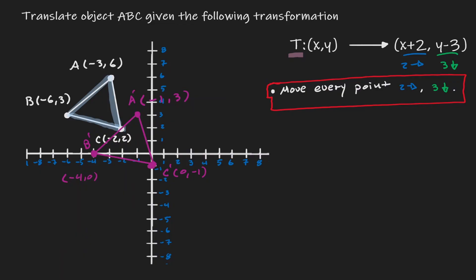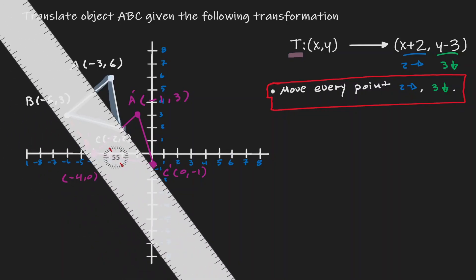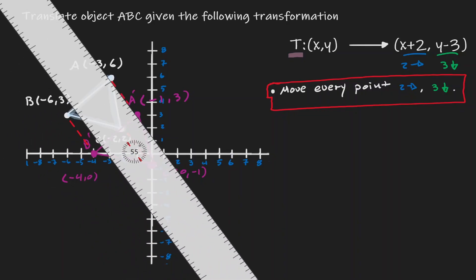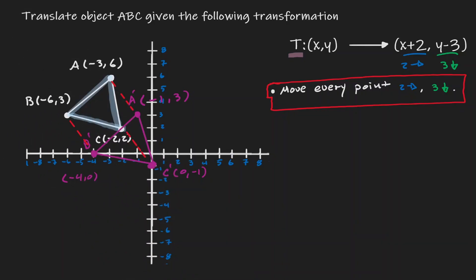Notice that every single point in our pre-image — A, B, C — got moved by the same distance and the same direction. And after that movement, we created our triangle A'B'C', which can be defined as the image of the original triangle.